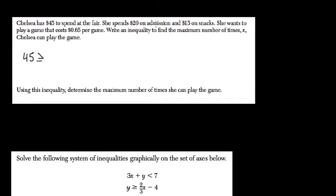She spends $20 on admission and $15 on snacks. So that's $35. And each game is $0.65. So she can play G for games, $0.65 per game. Writing an inequality, you'll find the maximum number of times she can play the game.